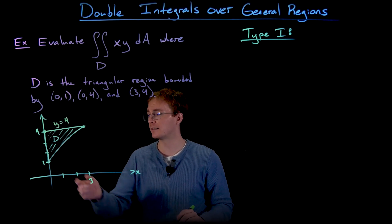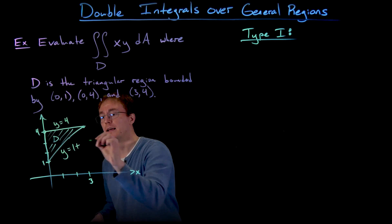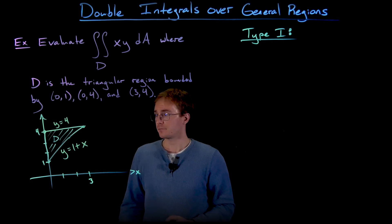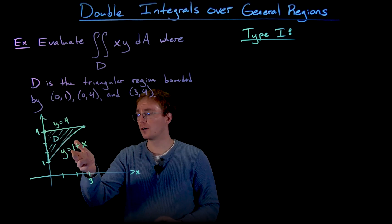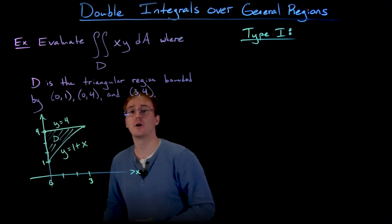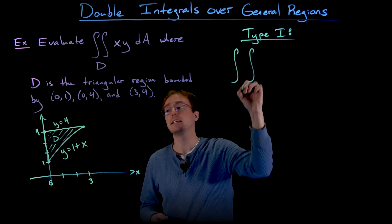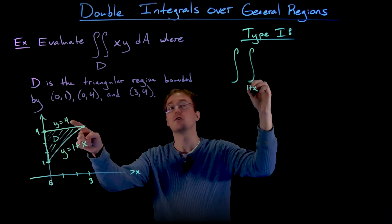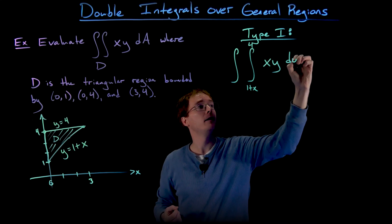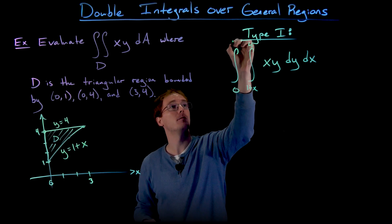Our curve on the bottom is the line through the points (0,1) and (3,4). That line has a y-intercept of 1 and a slope of 1 — going over 3 and up 3 — so the lower curve is y equals 1 plus x. This works for x values between 0 and 3. Treating D as a type 1 region, we set up the double integral as the integral from 0 to 3 of the integral from 1+x to 4 of x times y, integrating first with respect to y and then with respect to x.